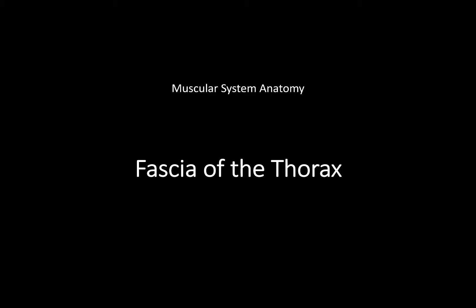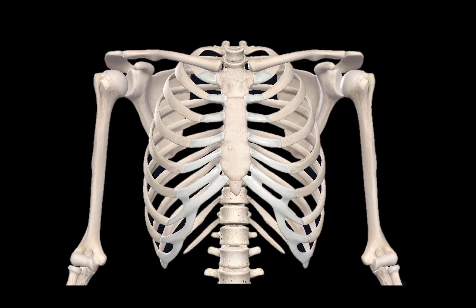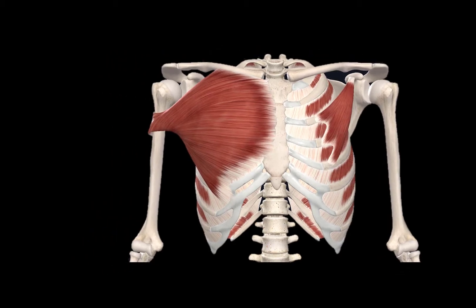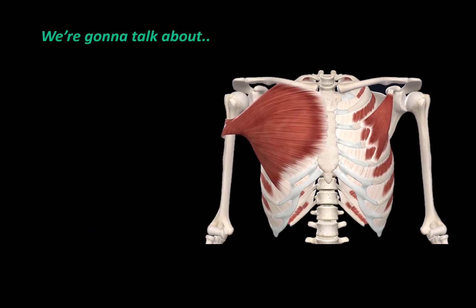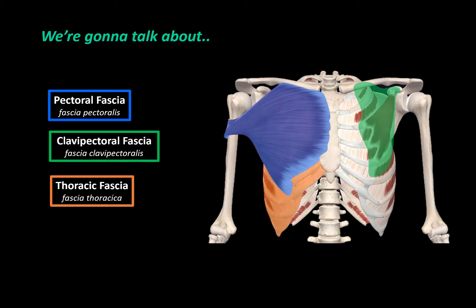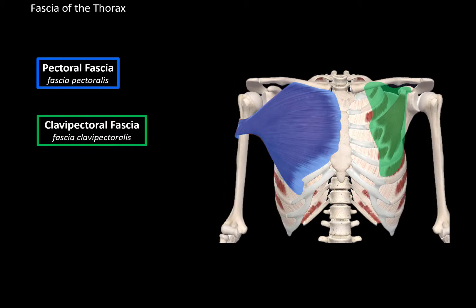What's up, Melitae here, and in this video we will be going through the fascia you will find in the thoracic region. Here is the plain anterior view of the thorax, and here we will add the main muscles associated with the thoracic region. In this video we are mainly going to cover the pectoral fascia, the clavipectoral fascia, thoracic fascia, and endothoracic fascia. We will start with the pectoral and the clavipectoral fascia.